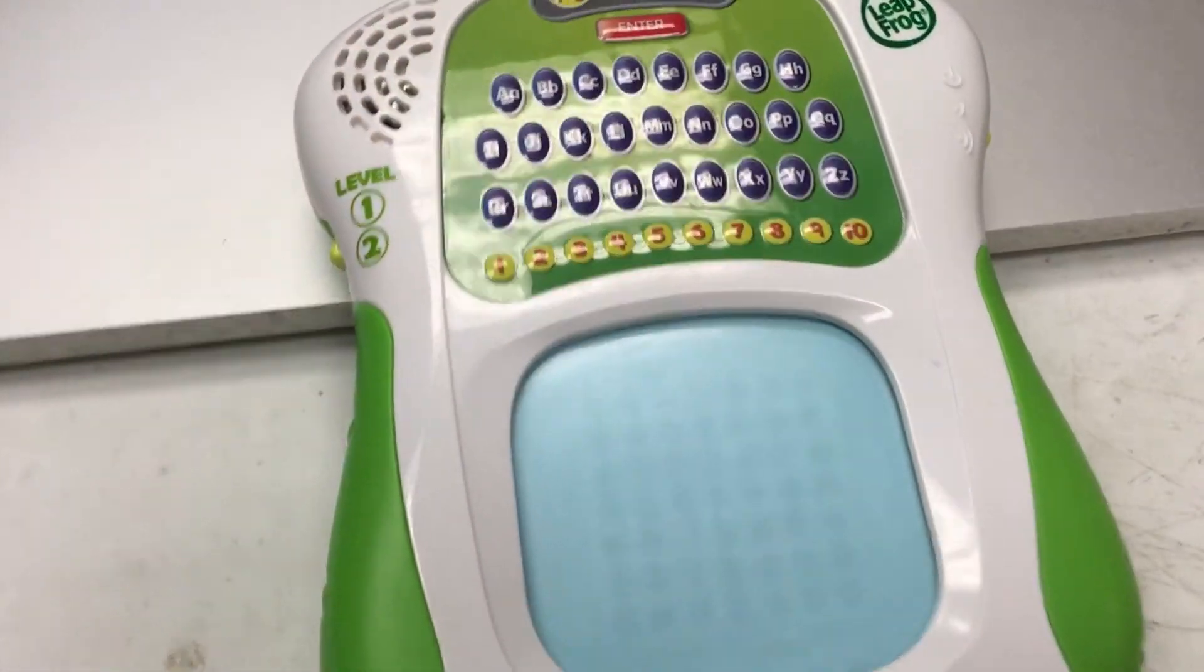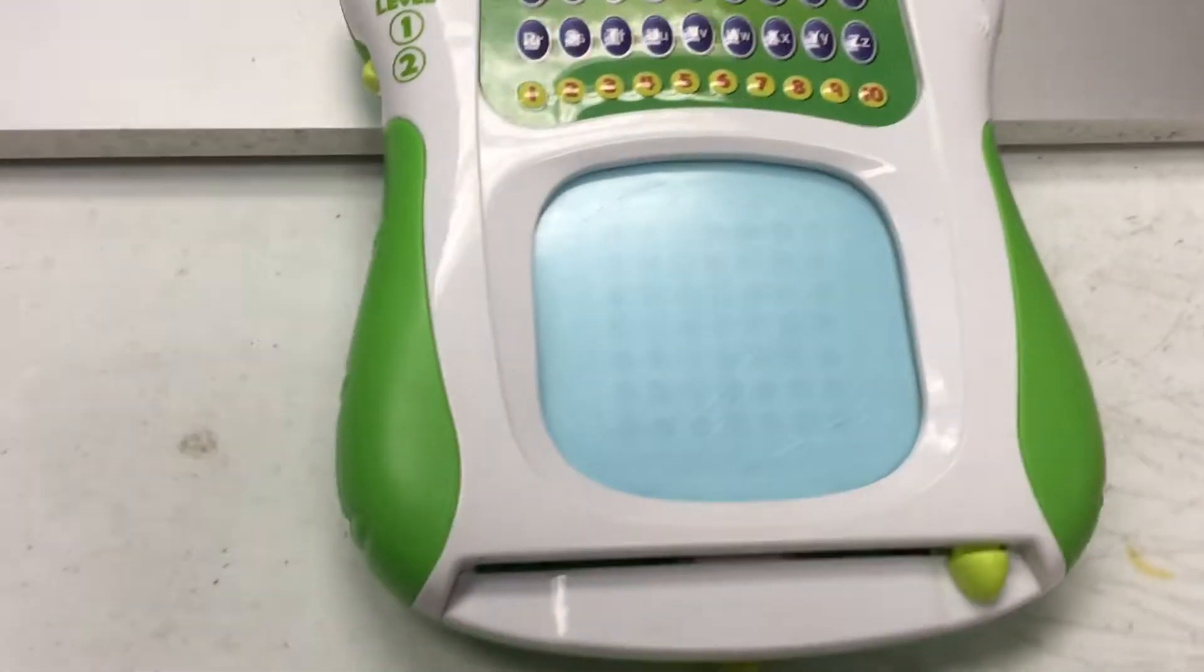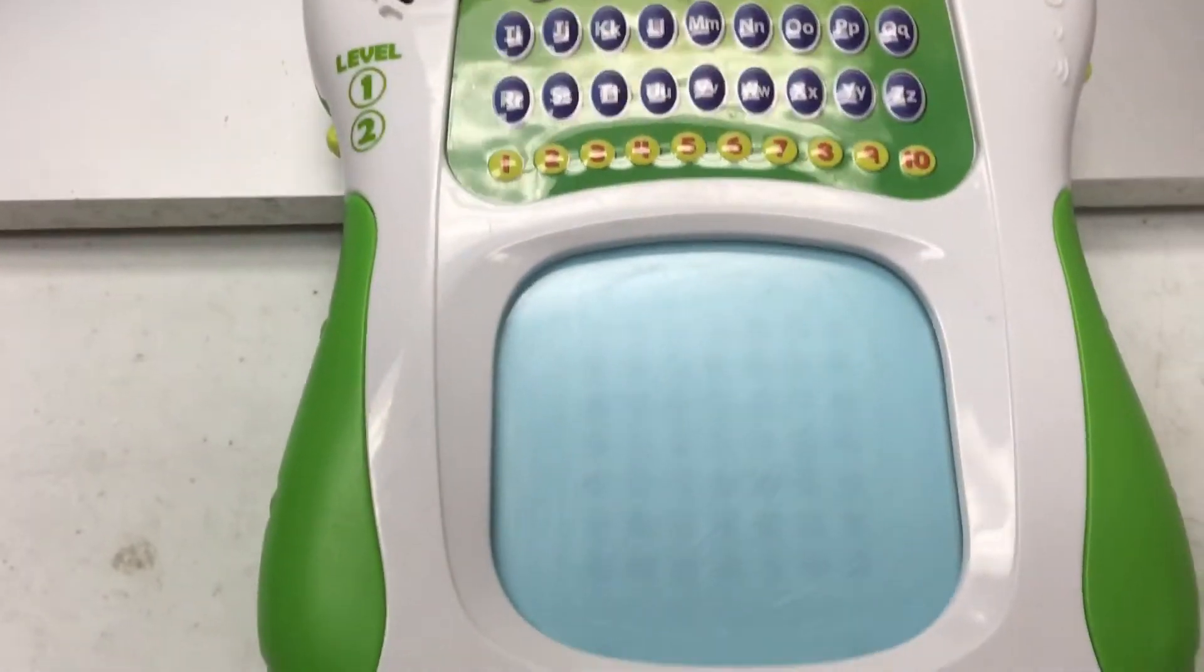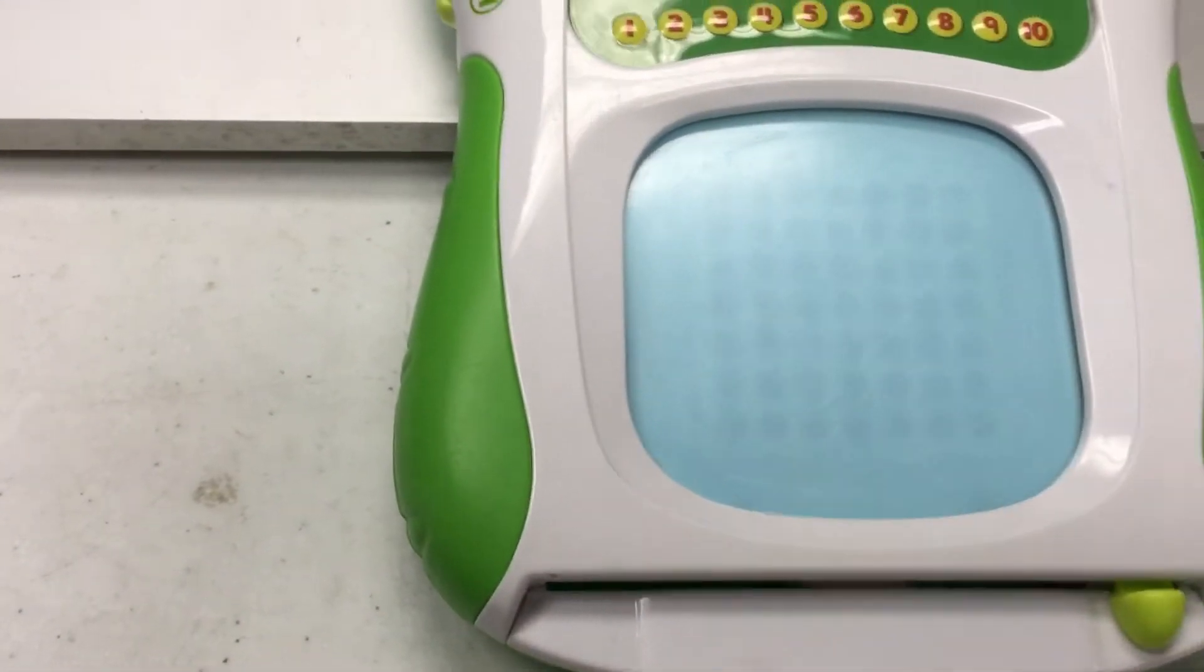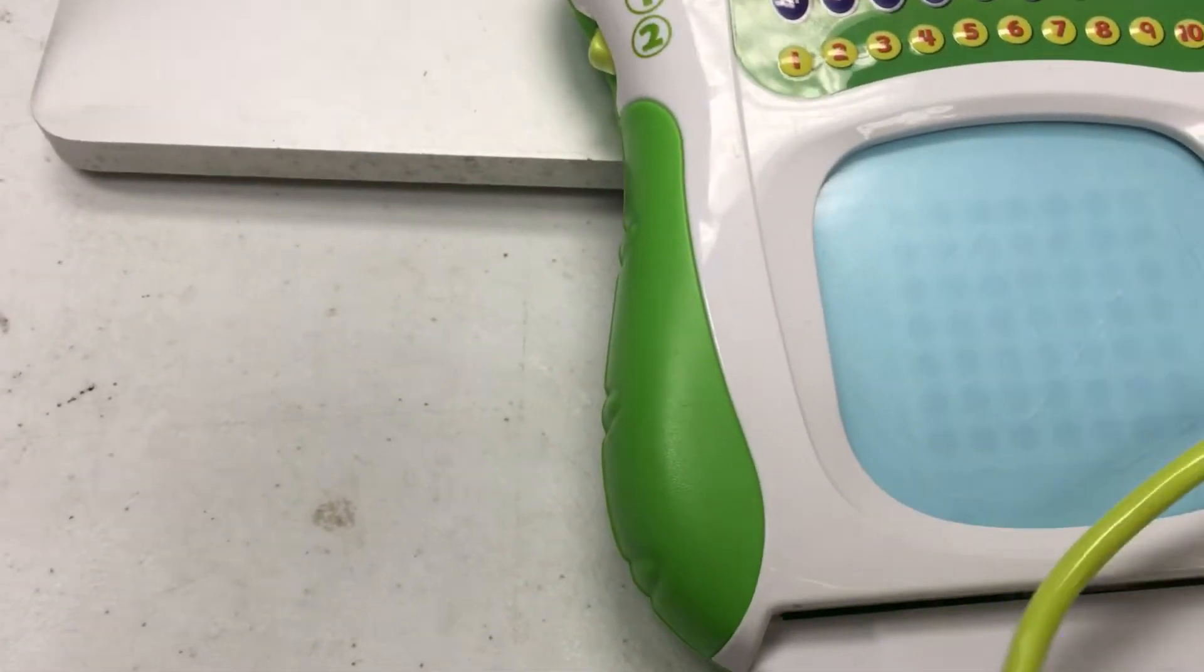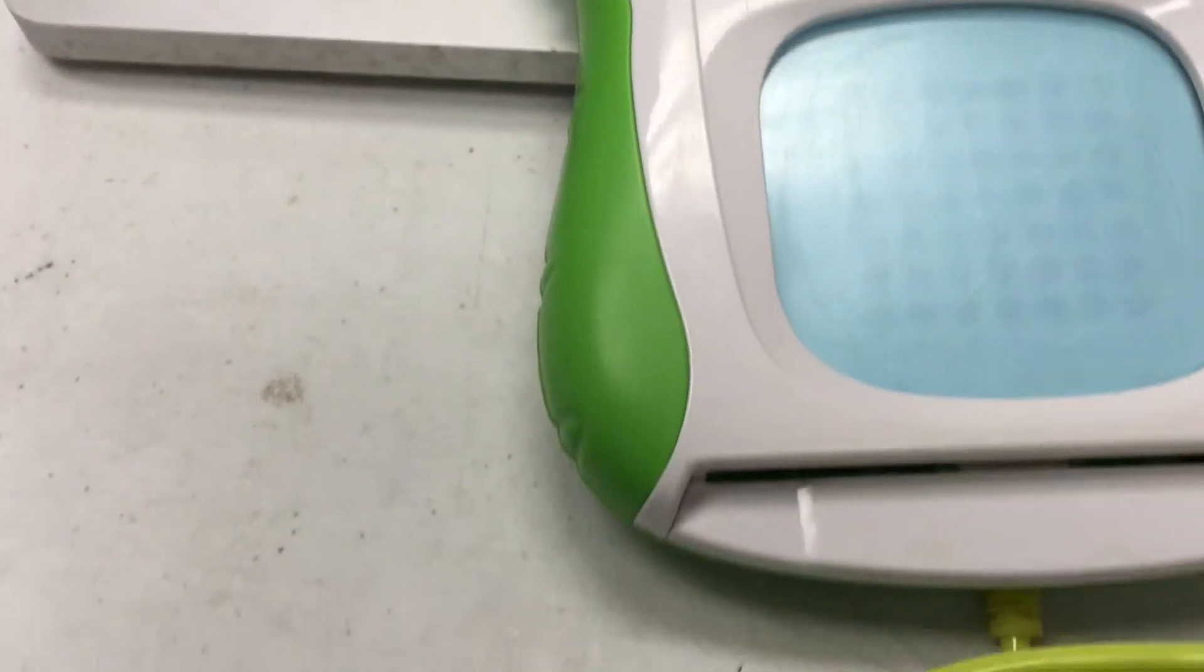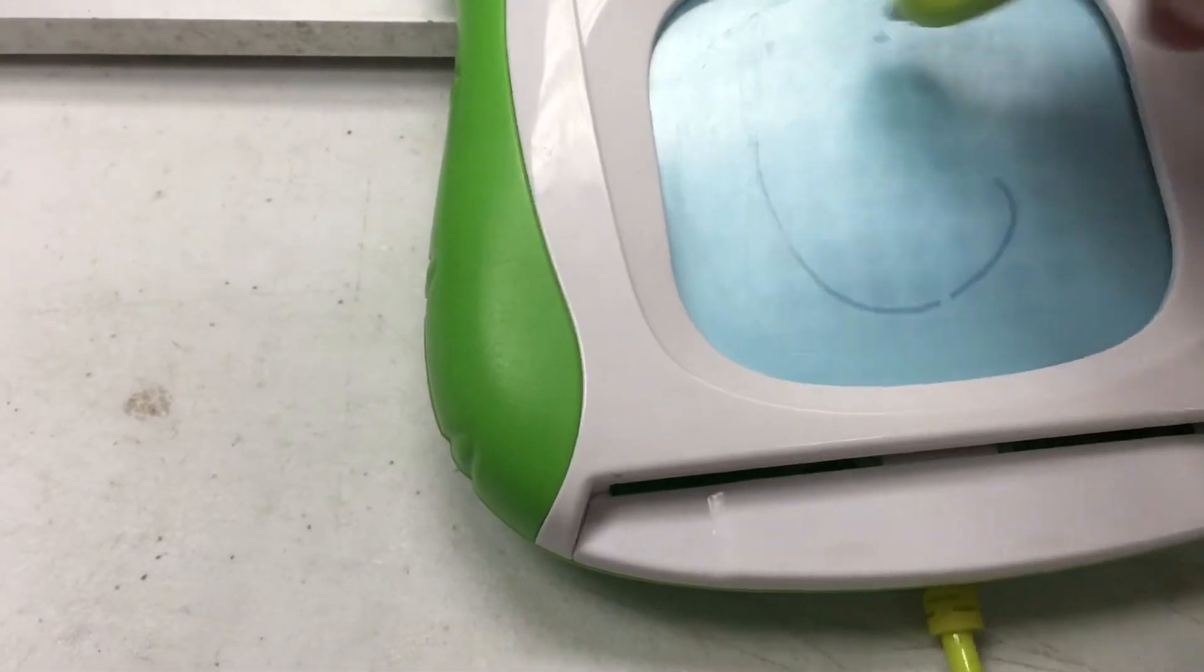This is the LeapFrog Scribble and Write kids toy. It teaches kids how to write and scribble. This is like an Etch-A-Sketch right there. So when I use the magnetic pen attached to the toy, it looks like this. There's a smiley face for you. You can erase it this way.